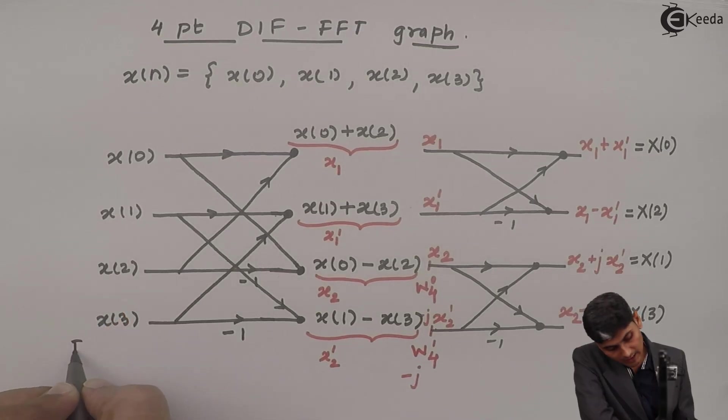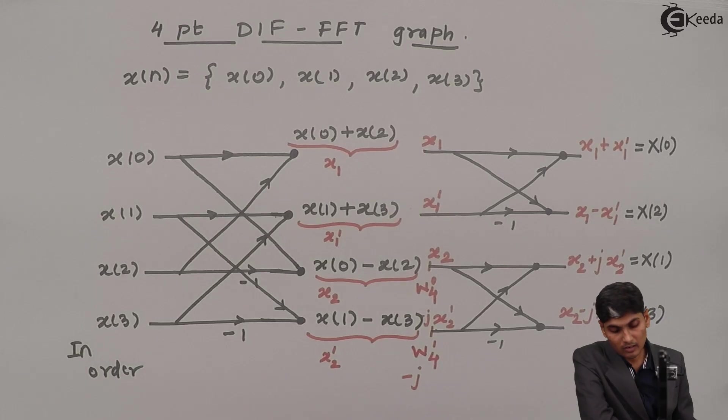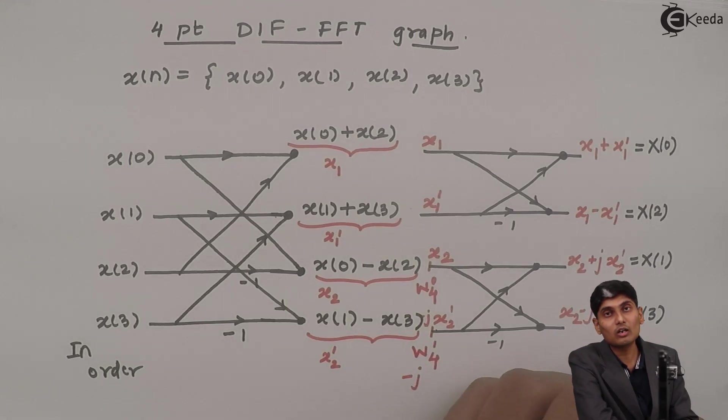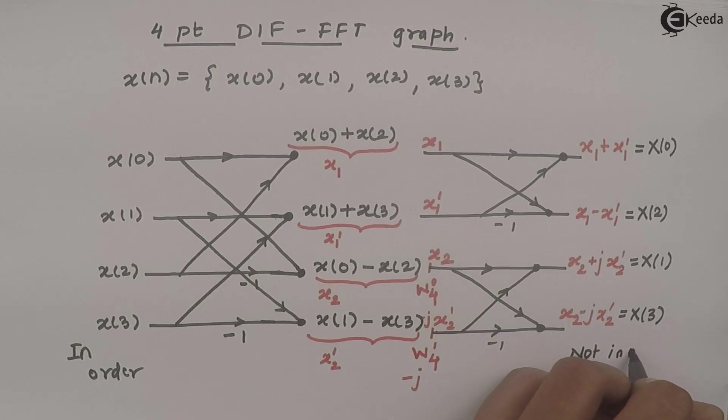So now what we are doing is, we are placing time sequences in order. Whereas the frequency samples, that is x of k are decimated or not in order. So these are not in order.